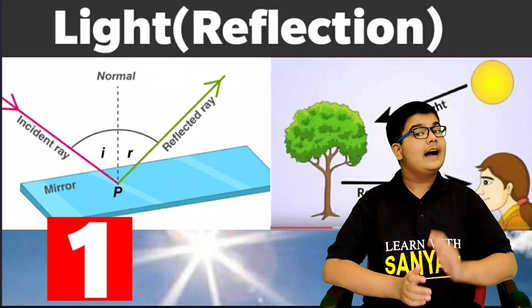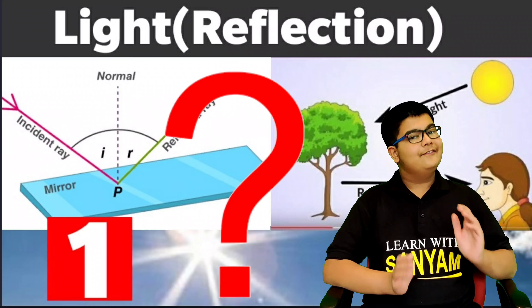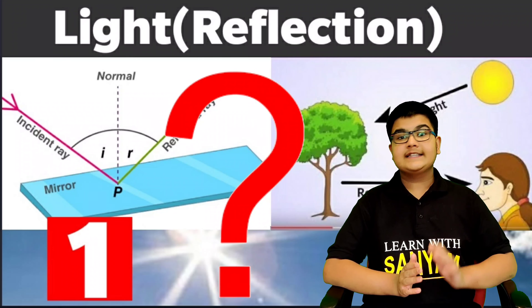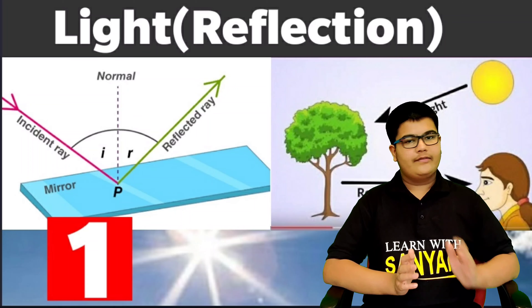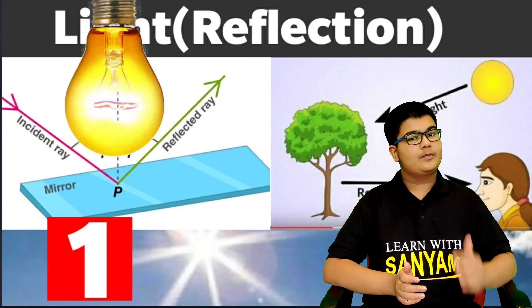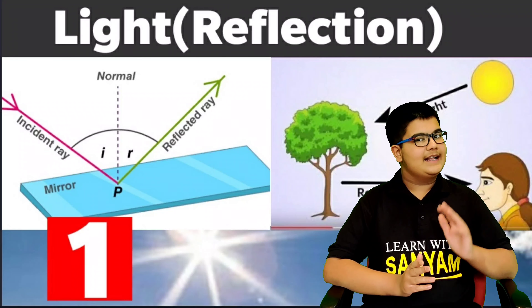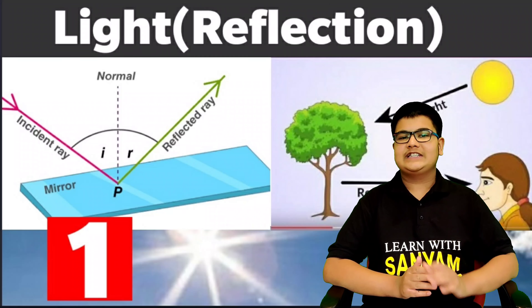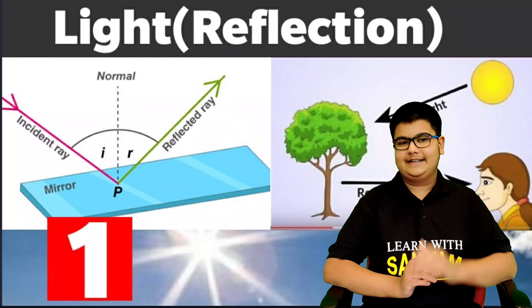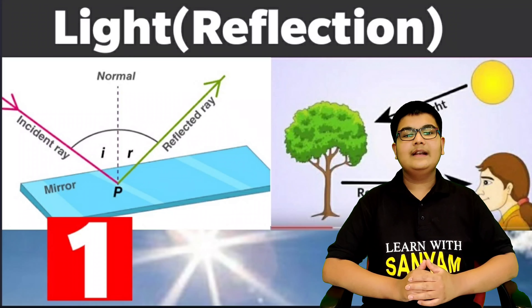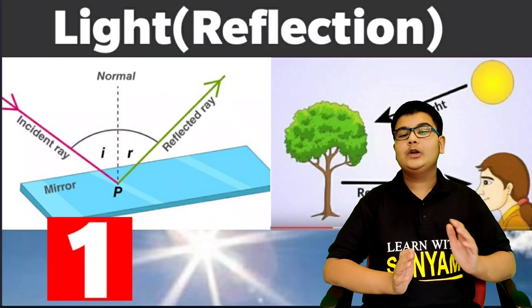Before starting with the chapter, I have a question. We see a variety of objects around us. However, when we are in a dark room, we are unable to see anything. But on lighting up the room, on switching on the light, we are able to see various objects. So what makes things visible? The answer to this question is the name of the chapter — that is, light. So light is responsible for making things visible to us.